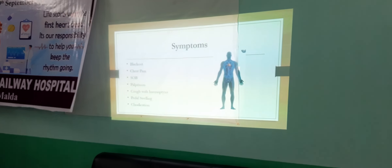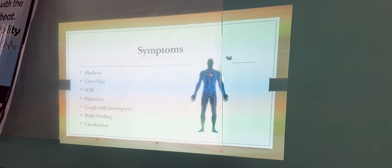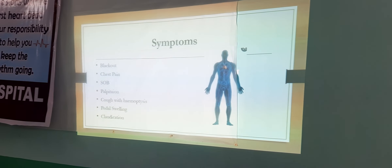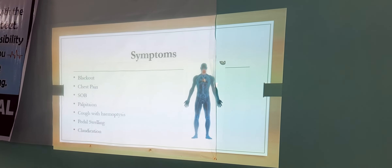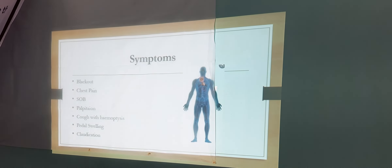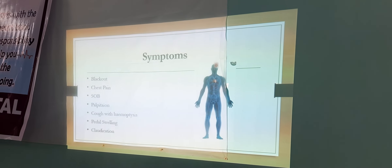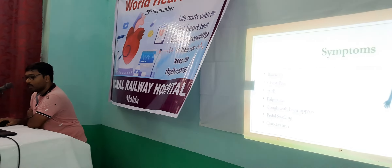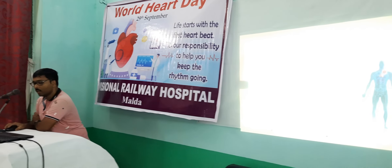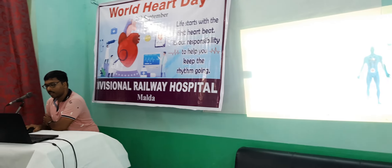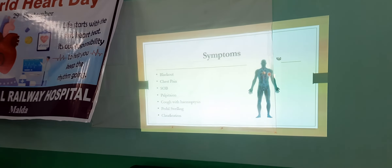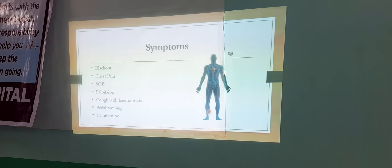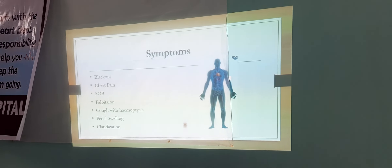Coming to the symptoms of cardiovascular disorder, from head to toe we can define the symptoms. In the upper part, that is blackout, it is one of the common symptoms of cardiological ailments. In the thorax, symptoms may be in the form of chest pain, shortness of breath, palpitation, and cough with hemoptysis. In the abdomen there may be pain secondary to hepatomegaly due to congestive cardiac failure, and in the lower limb, symptoms may be pedal swelling and claudication — intermittent pain while walking.